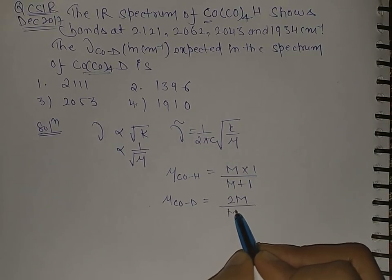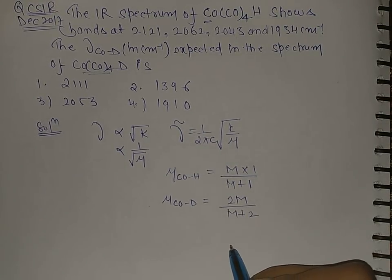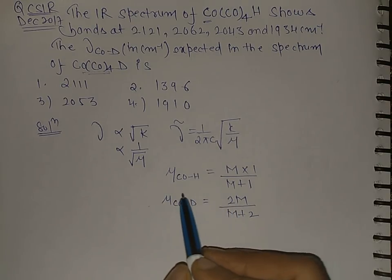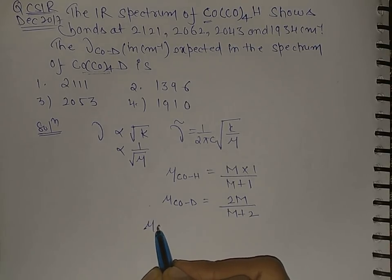So the mass of deuterium is 2, so this will be how much? 2M over M plus 2. Now take the ratio, are you getting my point?